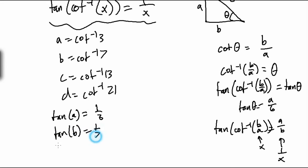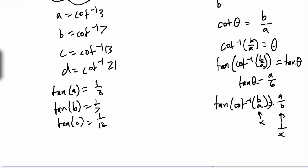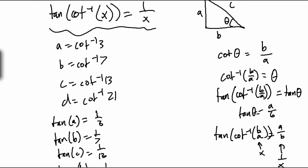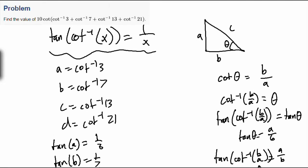So tan B is 1 over 7, tan C equals 1 over 13, and tangent D is 1 over 21. So we have this.